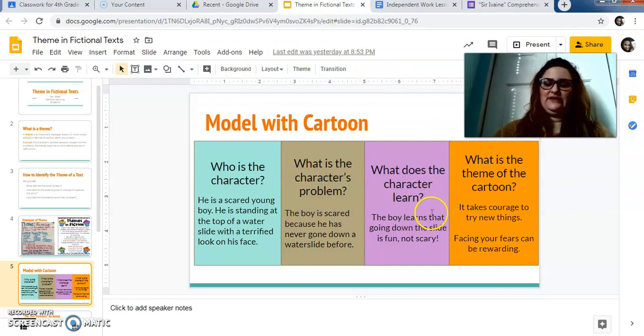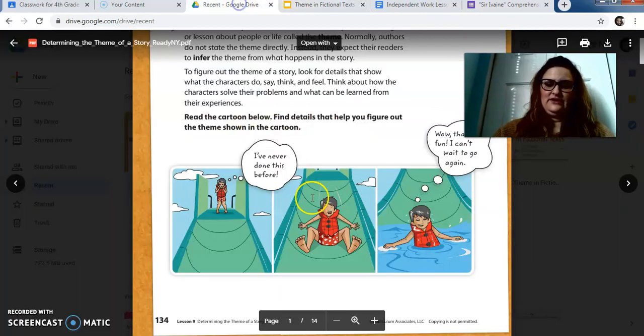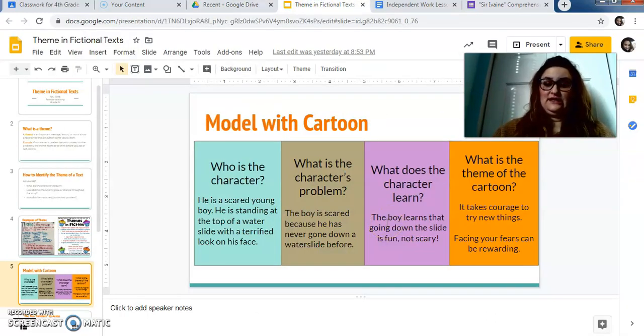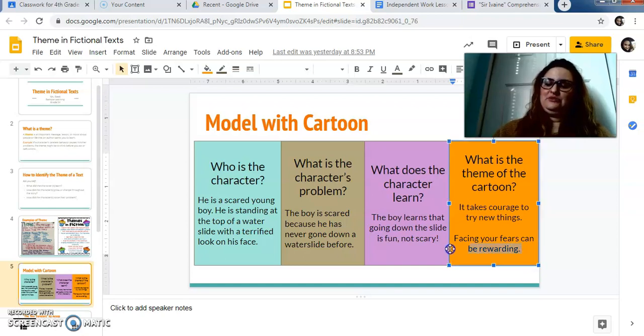What does the character learn at the end of the story? The character learns that going down the slide is fun, not scary. You can see he's having fun as he's sliding down. And at the end, he realizes, oh, look, I want to go again. Like, that was really cool. So that's a lesson that he, that's what he learned, not his lesson, but he learns that going down the slide is fun, not scary. So theme, possible themes of this cartoon based off of what we've asked ourselves, what we've proven. It takes courage to try new things. Facing your fears can be rewarding. That's probably even the best one because you can see he was really scared, but he loved it and he wanted to even go again.